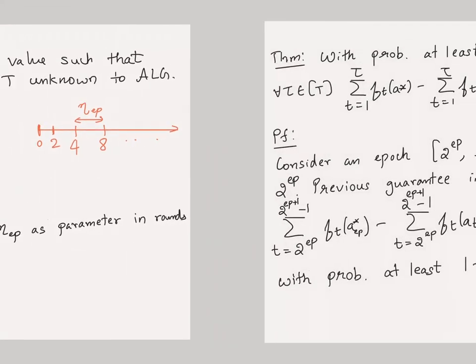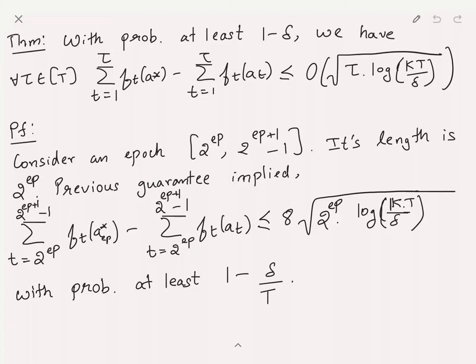The theorem states: with probability at least 1 minus delta, for every tau in T simultaneously, the cumulative regret from time step 1 to tau — that is, sum of f_t(a*_tau) minus f_t(a_t) — is at most order sqrt(tau * log(kT/delta)). Here a*_tau is the best action in hindsight if you fix the instance from time 1 to tau, so a*_tau can be different for different values of tau.